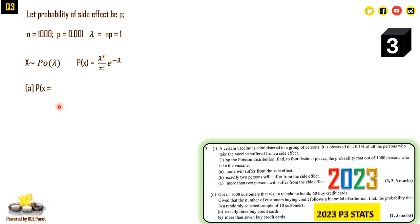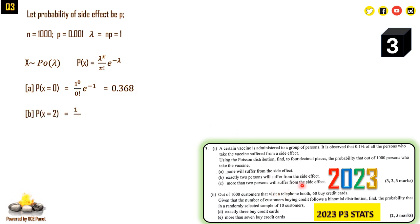X follows a Poisson distribution with parameter lambda = 1. For part (a), the probability that none suffer from the side effect: P(X = 0) = (1^0 / 0!) × e^(−1) = 0.3679 to four decimal places. For part (b), exactly two persons suffer: P(X = 2) = (1^2 / 2!) × e^(−1) = 0.1839 to four decimal places. Note that answers must be given to four decimal places — this is a common source of lost marks in exams.